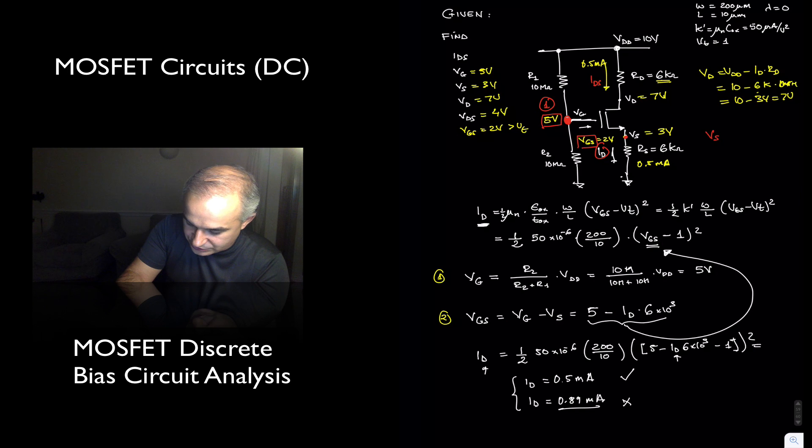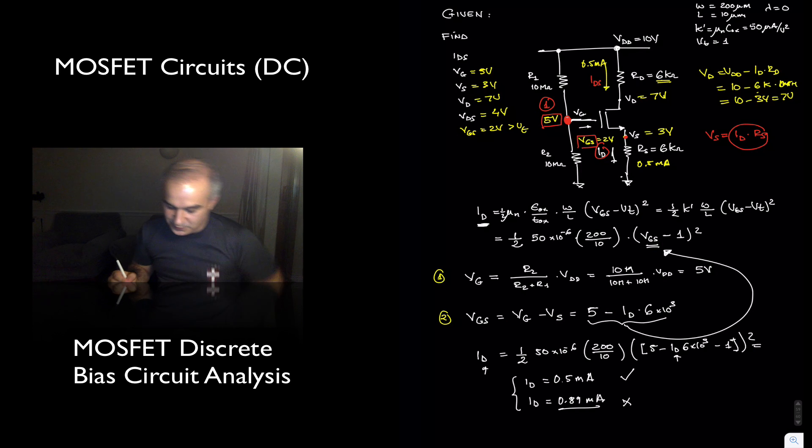In order to find it, you need to know the voltage gate to source. You know the voltage at the gate, and you can find an expression for the voltage at the source. The voltage at the source is always going to be the drain current, which is the source current, times the source resistance.